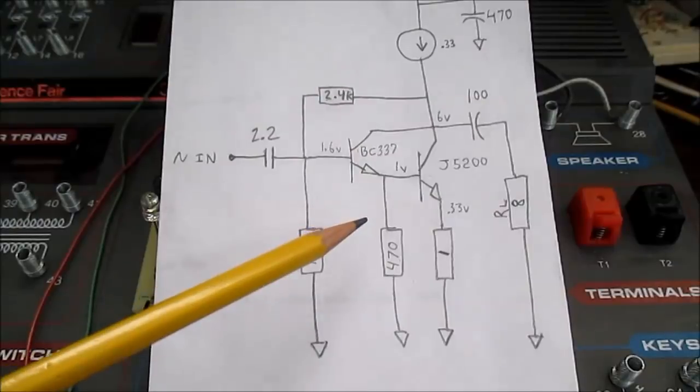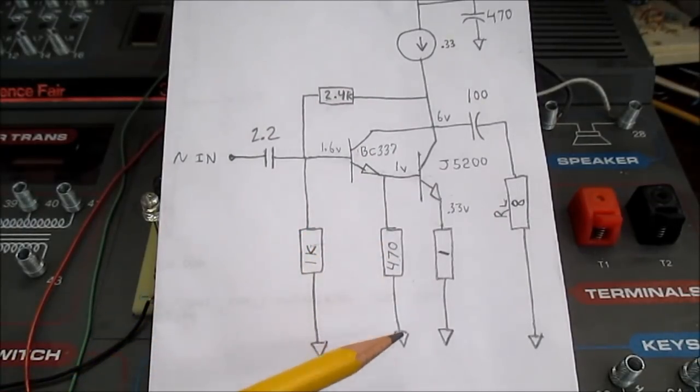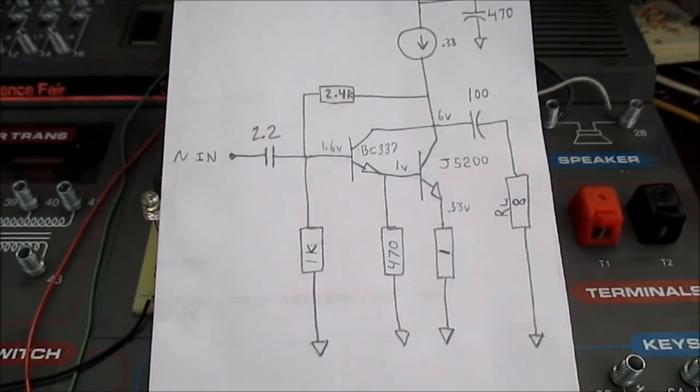So, hopefully this illustrates how the resistor speeds up the Darlington circuit. Well, that's it. Thanks for watching. Why did I add this resistor to this Darlington circuit? Ahhhh.